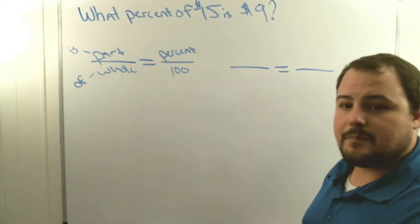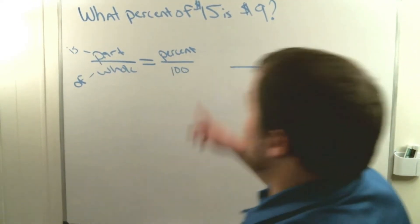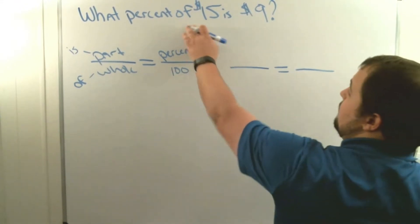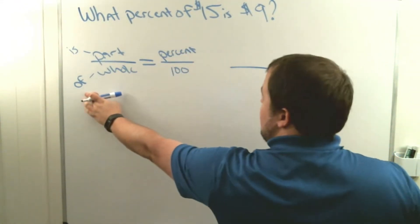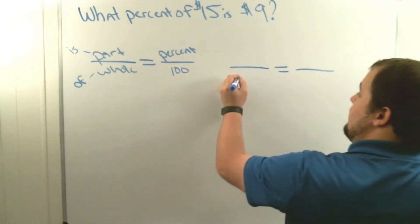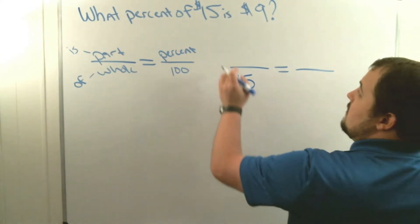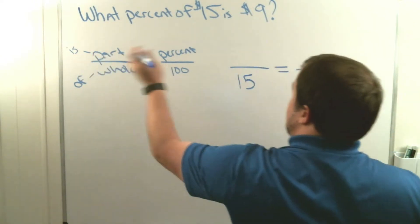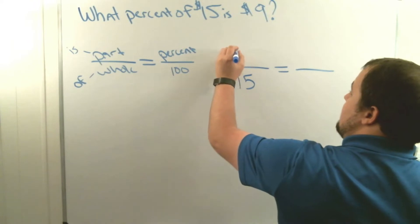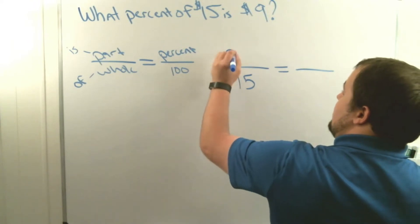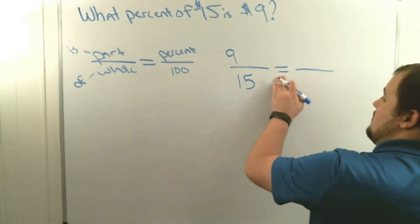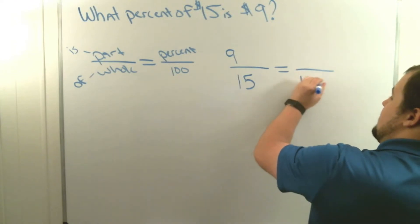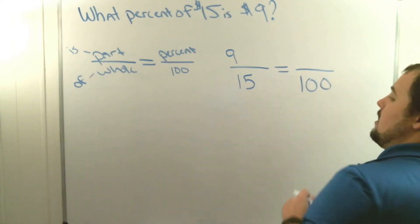So we read the question: 'what percent of fifteen dollars is nine dollars?' The word 'of' tells me that 15 is the whole. The word 'is' tells me that nine dollars is the part. So I have nine over fifteen equals the unknown percent over 100.